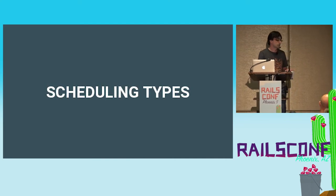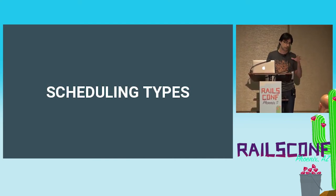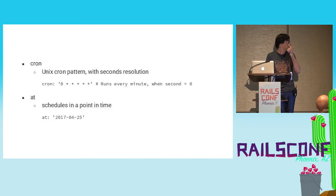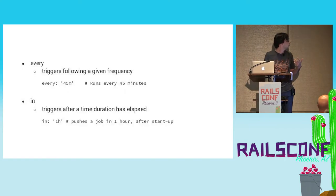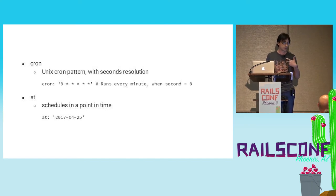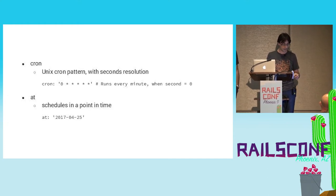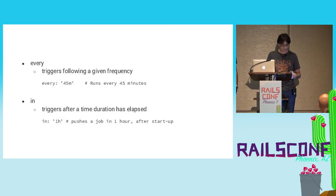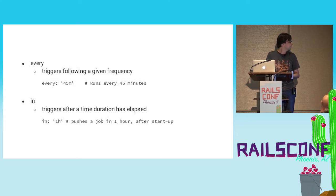There are different scheduling types. As we rely on Rufus, which is a separate gem, different scheduling types are supported. The most common one is cron, which runs at a cron-like syntax the same as the standard Unix cron tool. There's also 'at' type, which pushes a job once at a specific point in time. 'Every', which pushes jobs in a recurring way following a given frequency. And 'in' type, which pushes a job once after some time duration has elapsed.